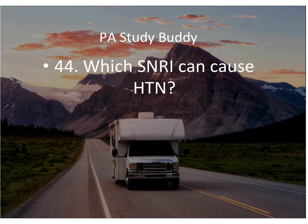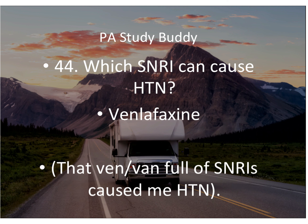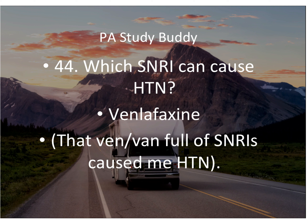Question forty-three: which SNRI can cause hypertension? In the stem you'll see a patient on an SNRI and the question may note the patient already has hypertension. The SNRI linked with hypertension is venlafaxine. Memory trick: think of a 'van full of SNRIs' causing hypertension — van, venlafaxine, hypertension, SNRI.